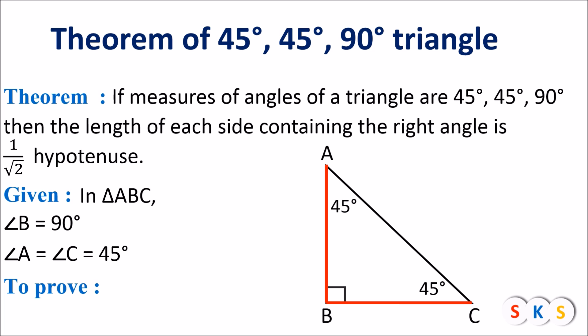We have to show that side AB and side BC equal 1 upon root 2 of the hypotenuse. The hypotenuse in this figure is AC. So we have to show that AB equals BC equals 1 upon root 2 of AC.